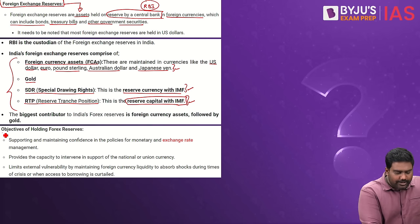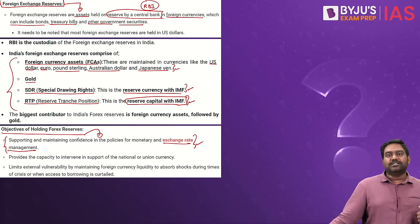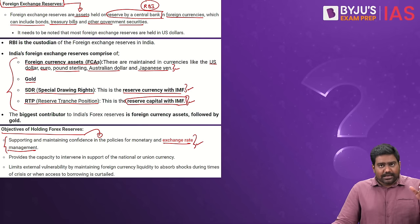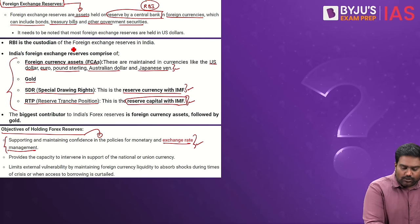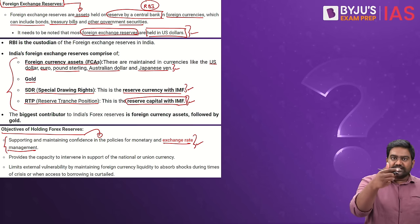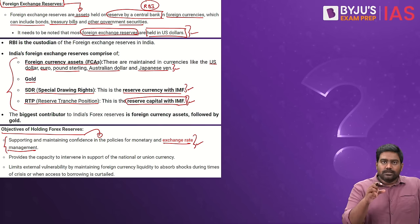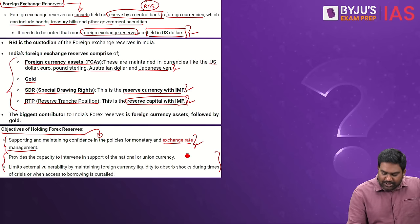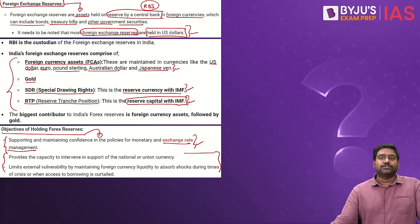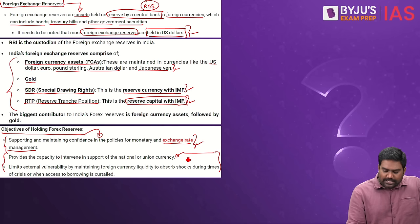Forex reserves are critical in order to maintain exchange rate stability, especially when the Indian currency depreciates against the US dollar. The RBI intervenes in the forex market and sells dollars in order to stabilize the Indian rupee. Forex reserves are always denominated in US dollars. So when the article says India's forex reserves have increased to $620 billion, that figure is always in US dollars. Forex reserves also promote confidence in foreign trade, reassuring investors, countries, exporters and importers that India can maintain its balance of payments position and fulfill payment commitments.